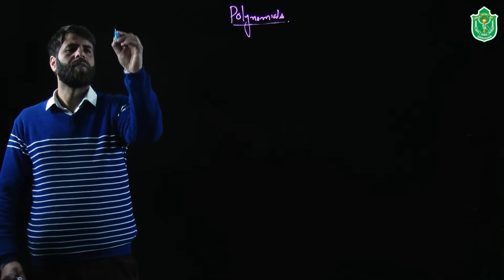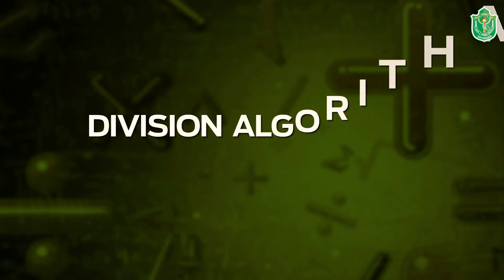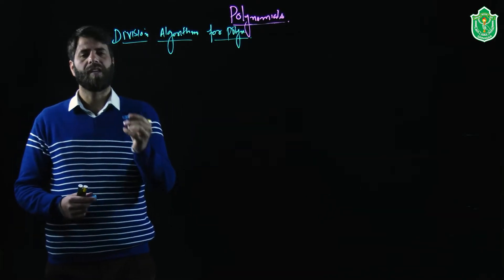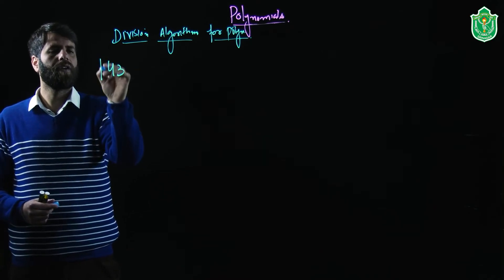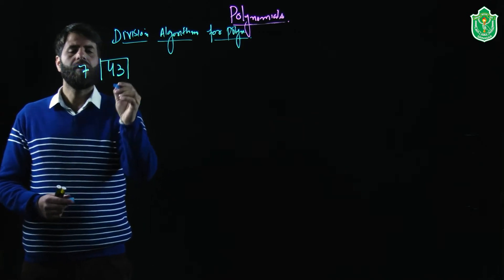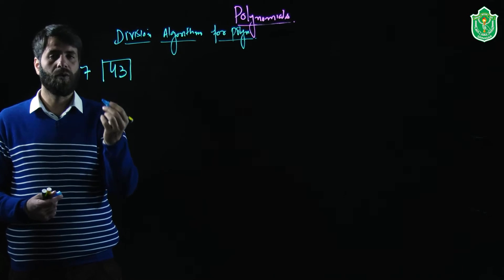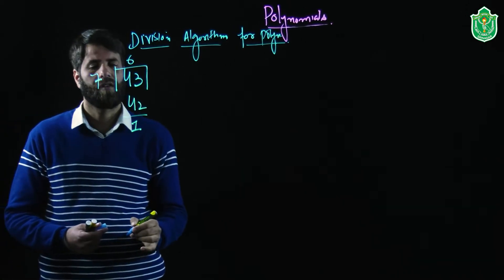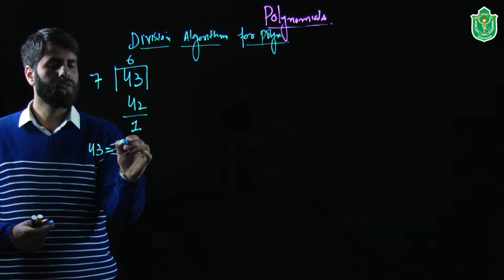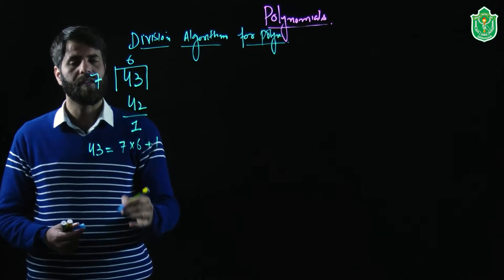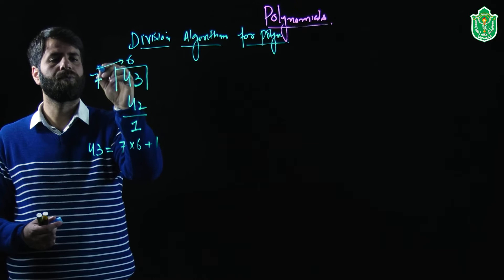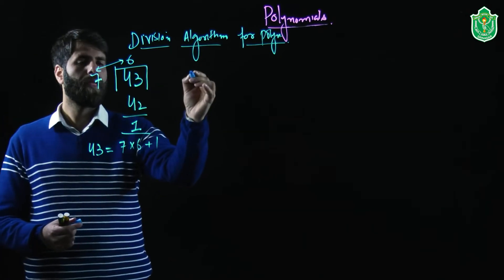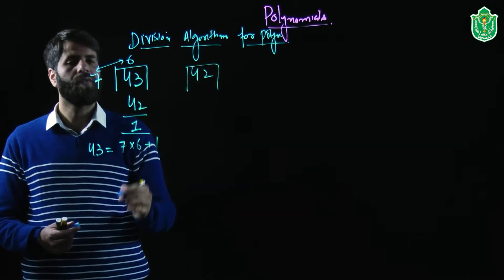We will now discuss the division algorithm for polynomials. To understand this, take the example of dividing 43 by 7. On dividing, we get quotient 6 and remainder 1, since 7 sixes are 42. So 43 equals 7 into 6 plus 1. Here the divisor is 7, the quotient is 6, and the remainder is 1. The remainder is always less than the divisor.